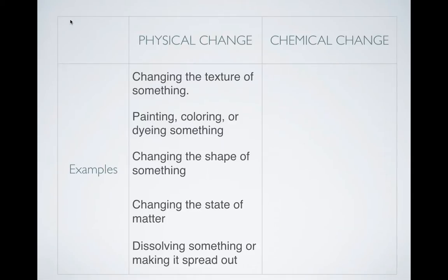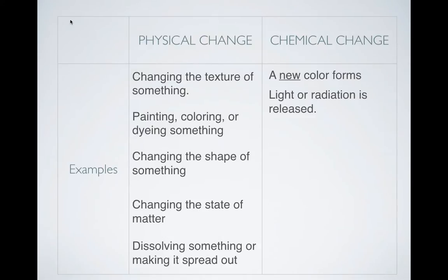What about chemical changes? What are the signs of a chemical change? First one: a new color forms. This isn't you dyeing something or coloring or painting it — but if you mix two things together and all of a sudden it changes color, that is most likely going to be a chemical change. Light or radiation is released — light is obviously something you can see, and radiation is something you really can't see for the most part. It could be a feeling like warmth or cold, which would be a form of radiation, or something really dangerous like x-rays or gamma rays, but we're not going to do anything like that in class.